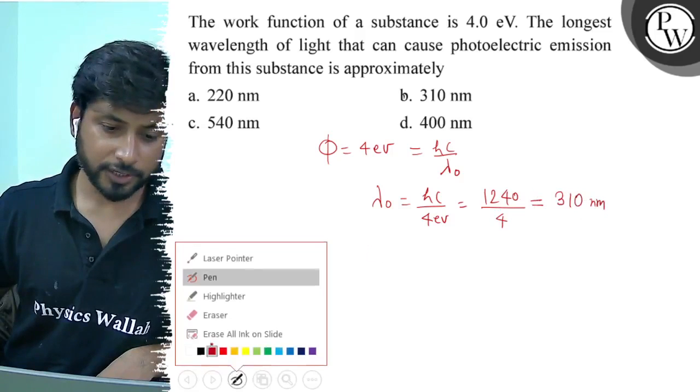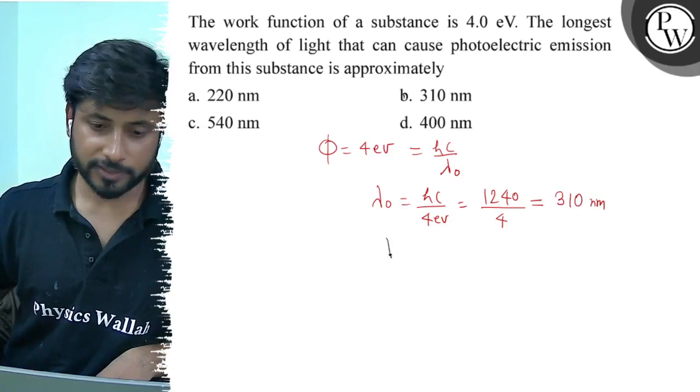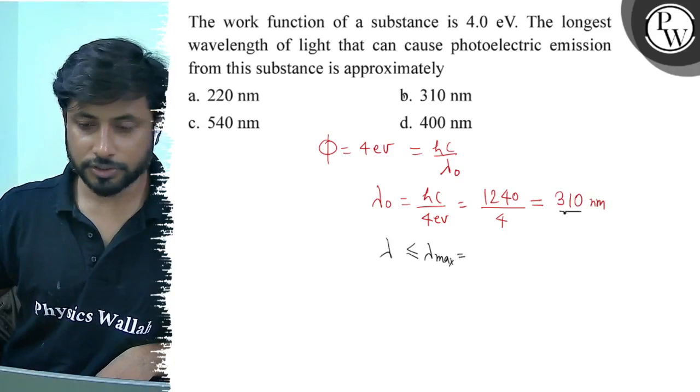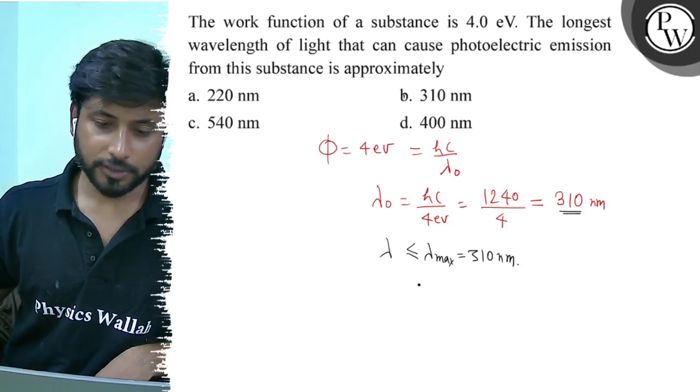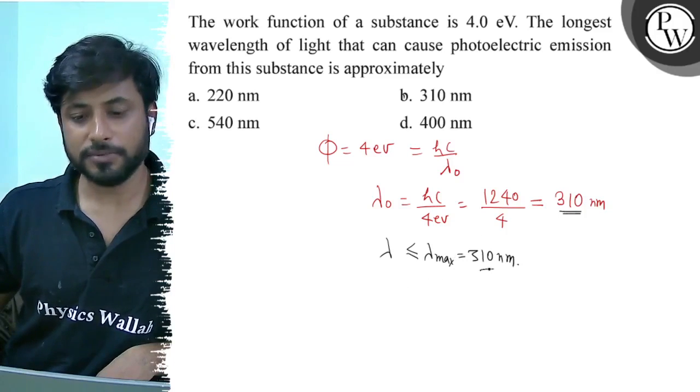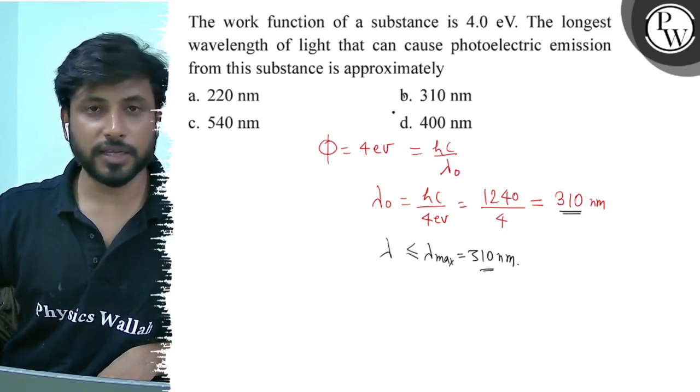We know that lambda should be less than or equal to lambda max, and that is equal to the threshold wavelength, 310 nanometer. So lambda, which is 310 nanometer maximum, is less than or equal to this.